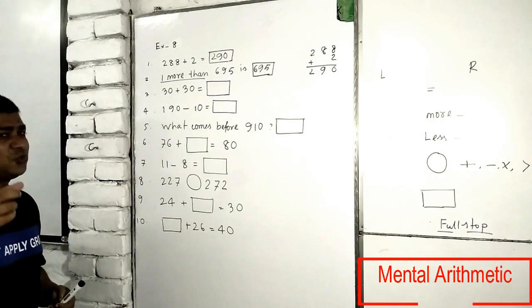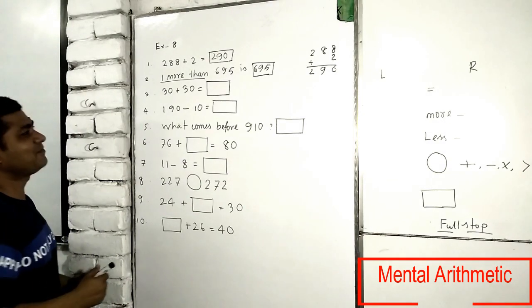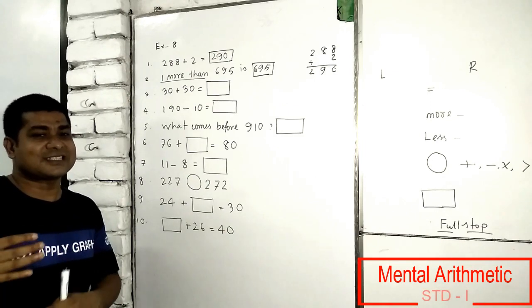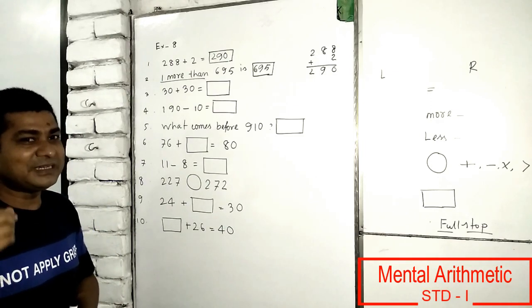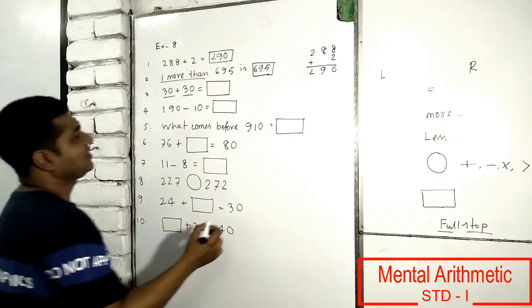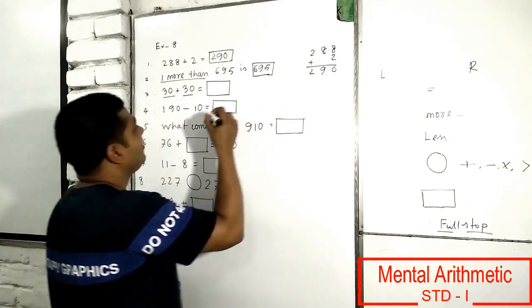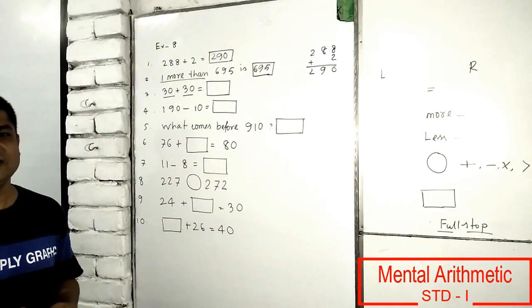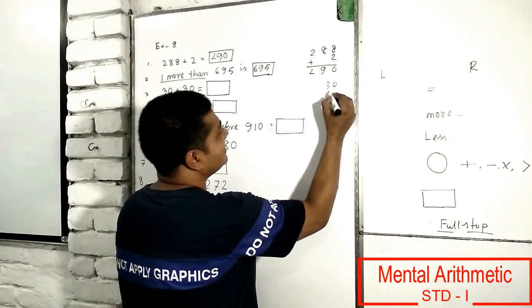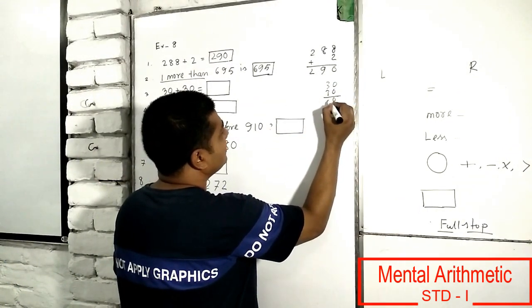So 30 and 30. If I will not count horizontally, I will write vertically. So 30 plus 30, it will be 60.